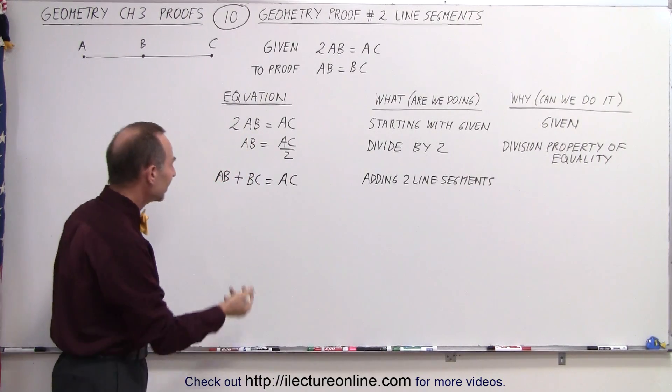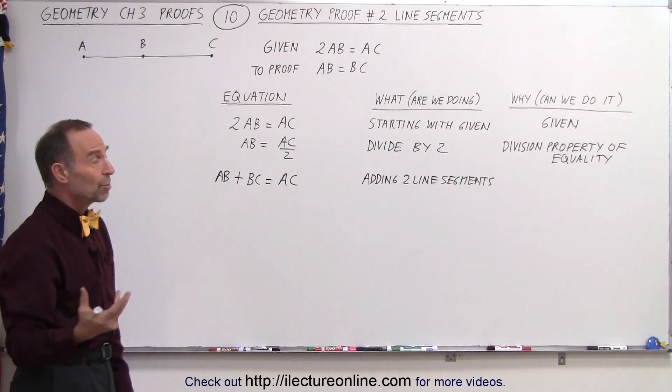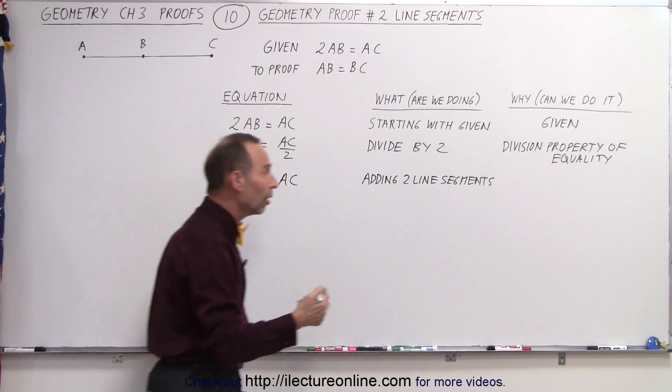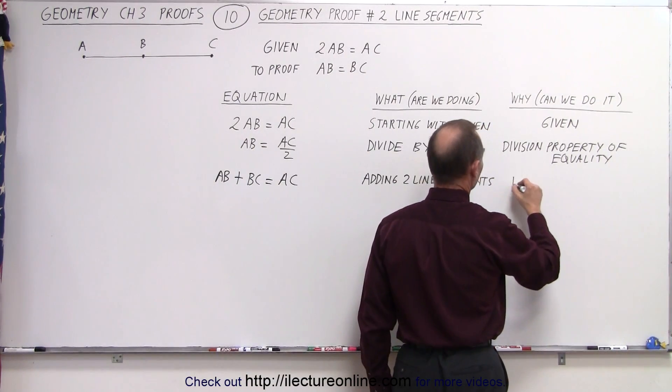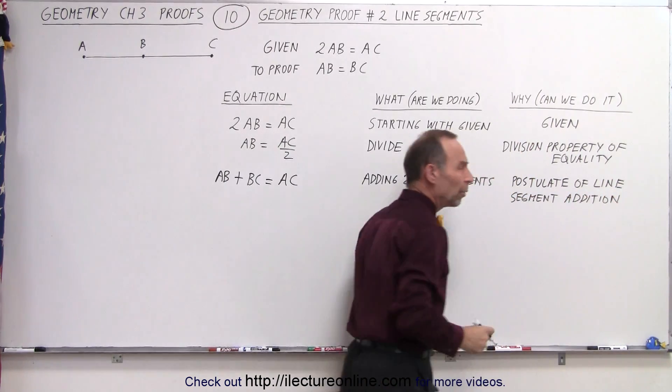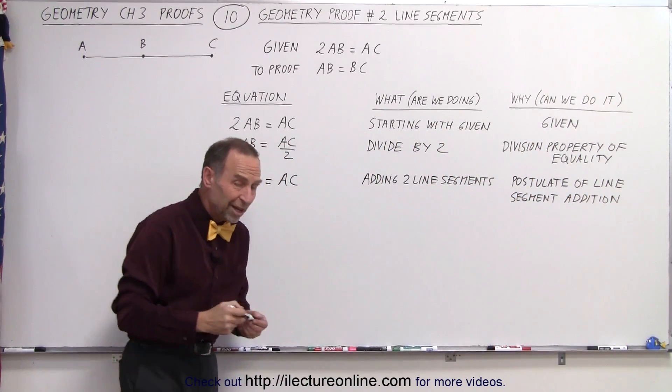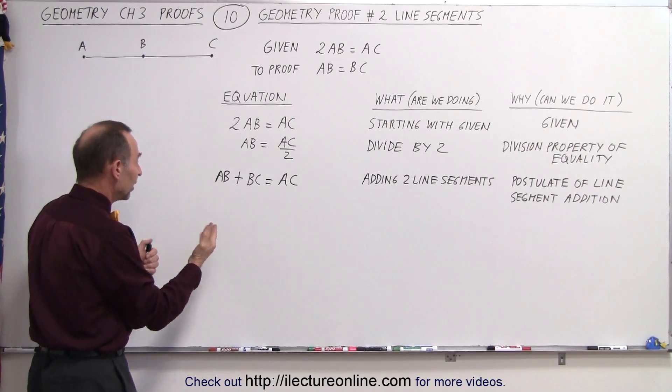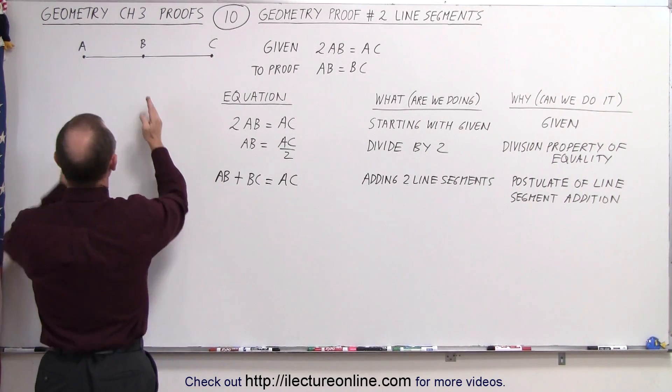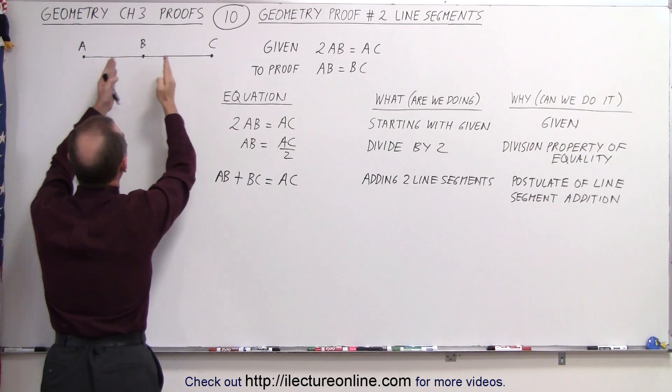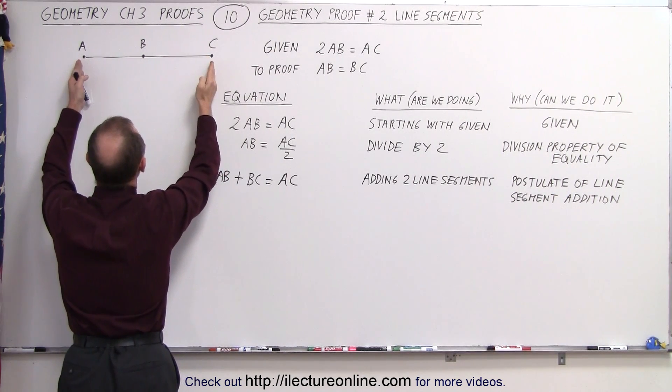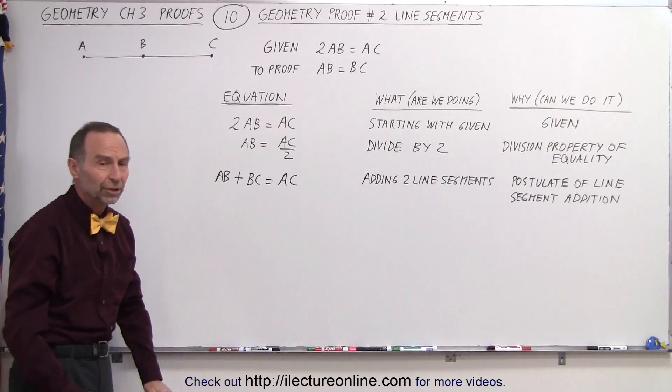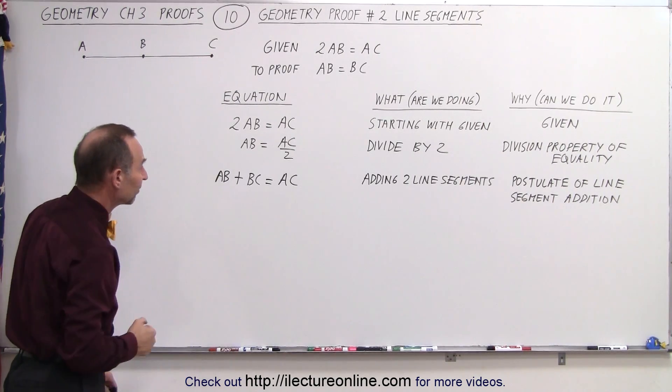But why can I do that? Why can I make that statement? Why would that statement be correct? Well, that's correct by what we call the postulate of line segment addition. So when we talk about a postulate, what we're saying is that it's self-evident. We don't have to prove it. It looks like that should be correct. If we take the length of this segment and we add it to the length of this segment, then that will equal the length of the total segment from A to C. So that doesn't need to be proven. It is self-evident by looking at the line segments.